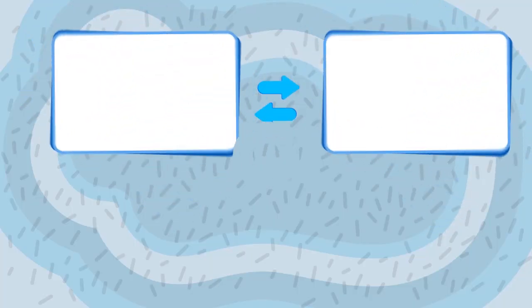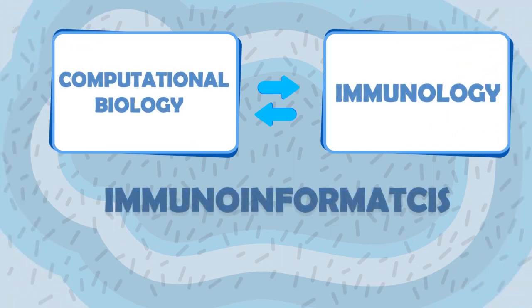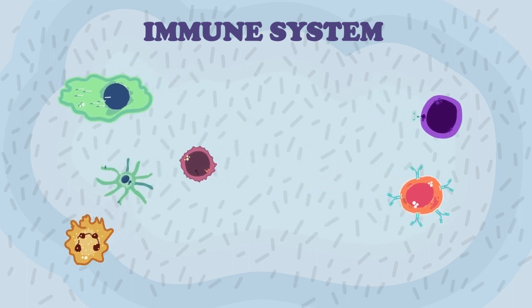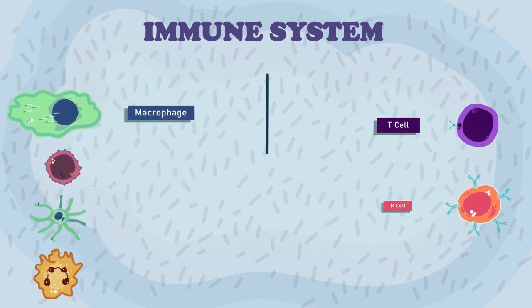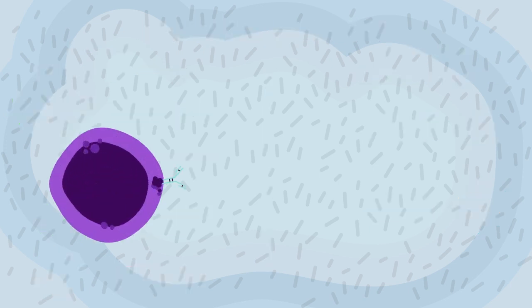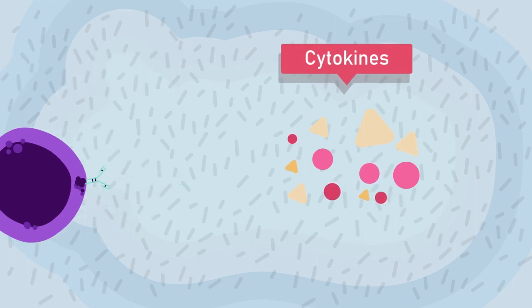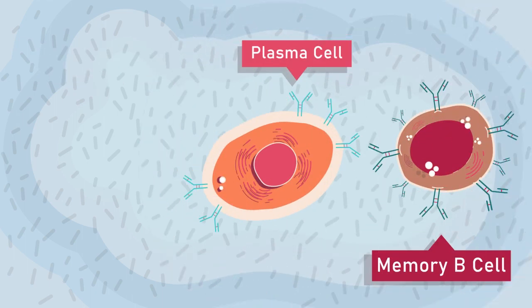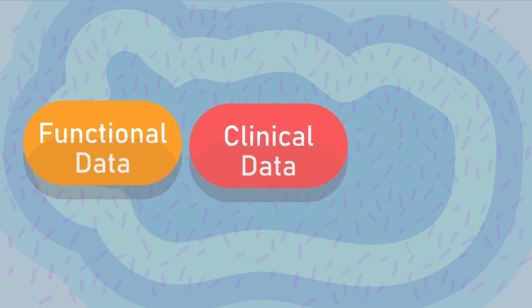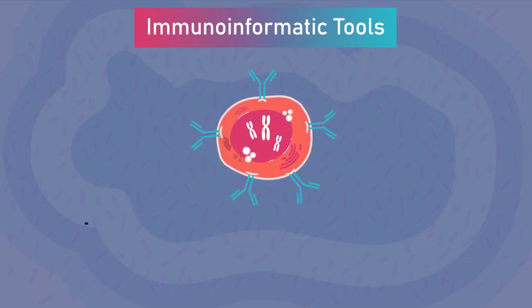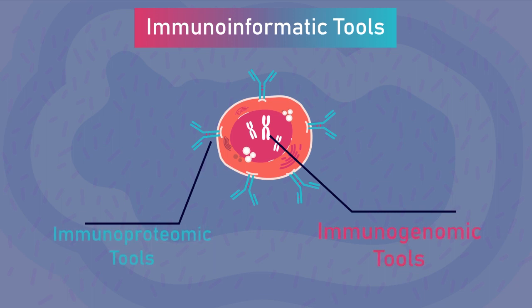Hence, researchers had to specify a subfield of bioinformatics dedicated to immunology: immunoinformatics, which connects computational biology and immunology and will be our topic today. The immune system is so diverse it is divided into discrete types. The innate and the adaptive immune system employ many cellular strategies to combat pathogens through different immune responses, varying greatly between individuals. Immunoinformatics tools are mainly concerned with the functional, clinical, and epidemiological data of the system, and are subdivided into immunogenomic and immunoproteomic tools, which analyze genes and proteins related to immune function respectively.